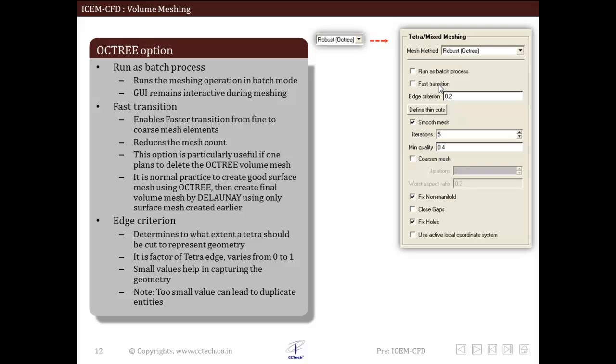Next option is edge creation. Tetra in octree method is cut so that geometry can be captured. This option specifies to what extent tetra should be cut. This is a factor of tetra edge, it varies from 0 to 1. If octree fails to capture the geometry due to sharp angle, then reducing this value will help to capture it properly.